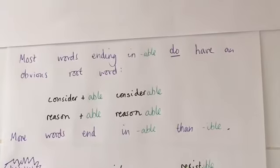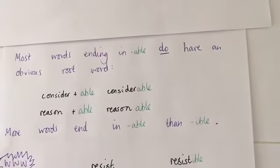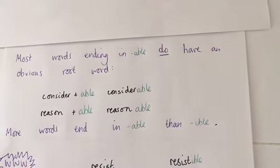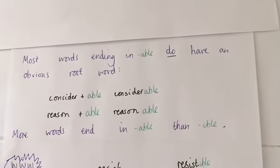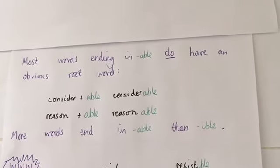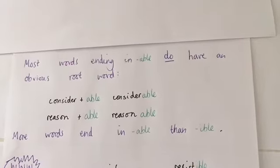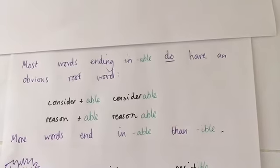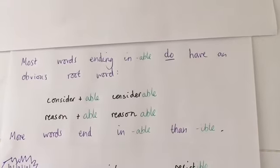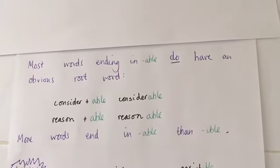That's different when we look at words ending in -able, because most of those words do have an obvious root word. A couple of examples: 'consider' plus -able equals 'considerable', and 'reason' plus -able equals 'reasonable'.